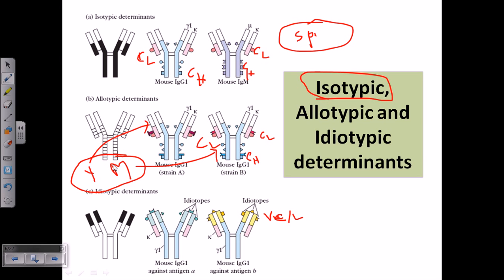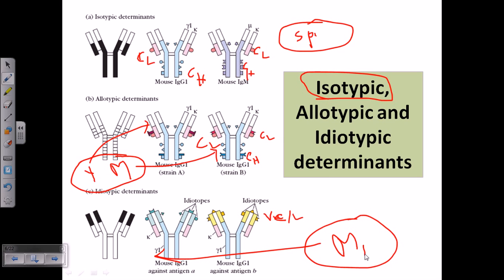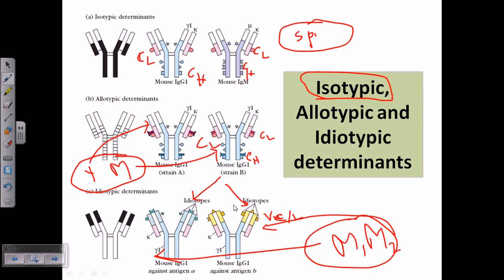For allotypic determinants, all the allotypic determinants within my own immunoglobulins will be the same. But for idiotypic determinants, we find different types of idiotypic determinants across all the different immunoglobulins I possess. If you take only my immunoglobulins — immunoglobulin one and immunoglobulin two — and check both of them, they will have variations in their idiotypic determinants, because idiotypic determinants are present in the FAB region or variable region, and they vary even within the same organism.